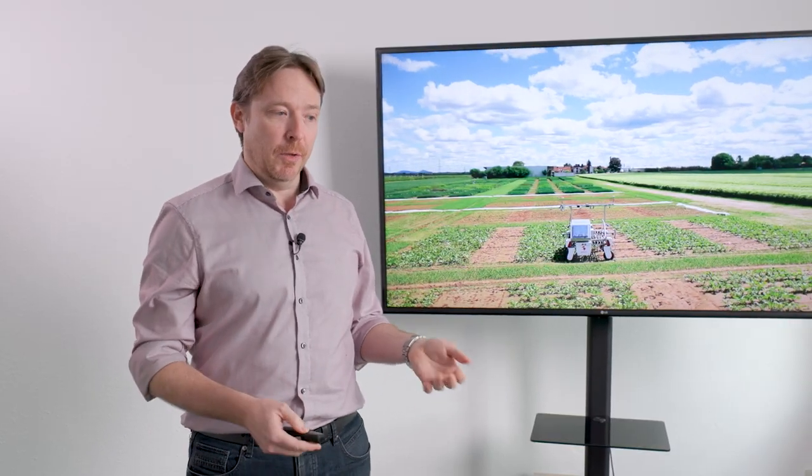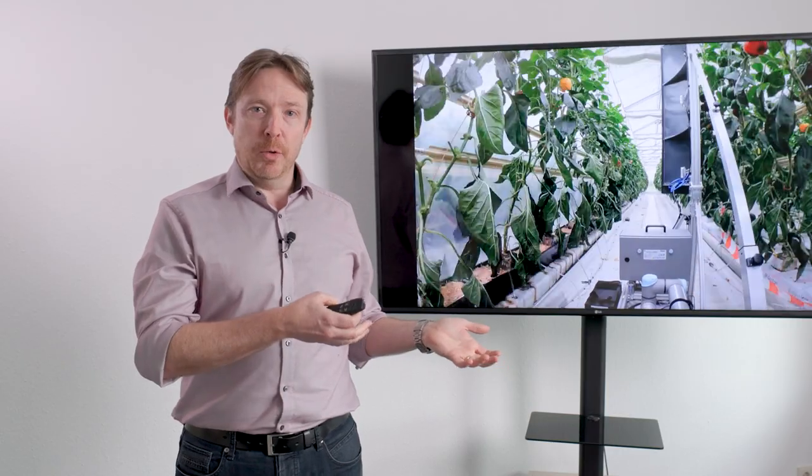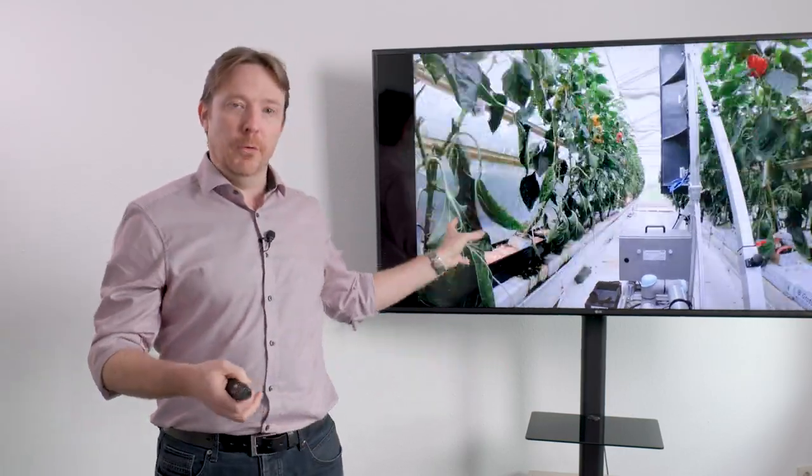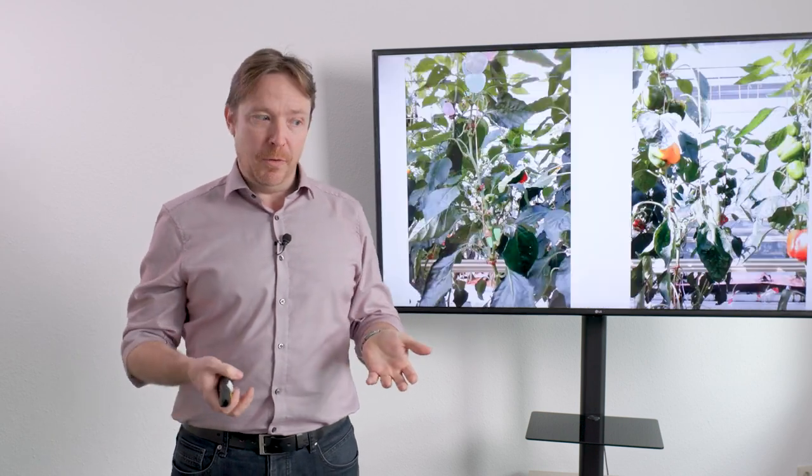Another system that we have in a completely different environment is Parabot going through, in this case you can see it going through a glasshouse, and the task here is to go through and detect and count the number of sweet pepper within the field.